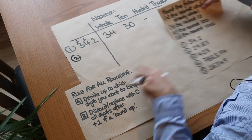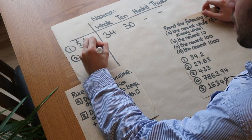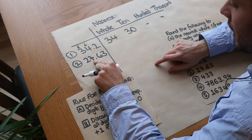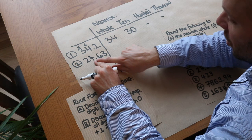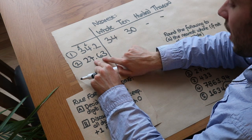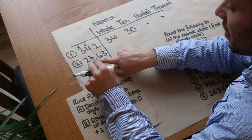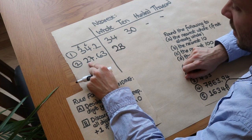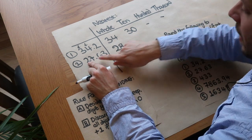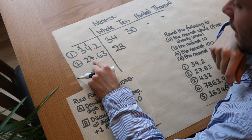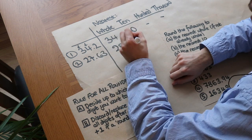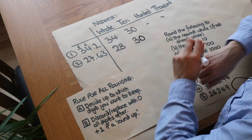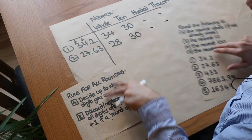Second number: 27.63. To the nearest whole, we keep up to the units digit - the seven. We check the digit just after the decimal point, six. Is it greater than or equal to five? Yes, so the seven goes up to eight: 28. To the nearest ten, we keep up to the tens digit - the two - and check the next digit, seven. Yes, that's greater than or equal to five, so the two goes up to three, and units becomes zero: 30. We don't need hundred or thousand as it's less than a hundred.